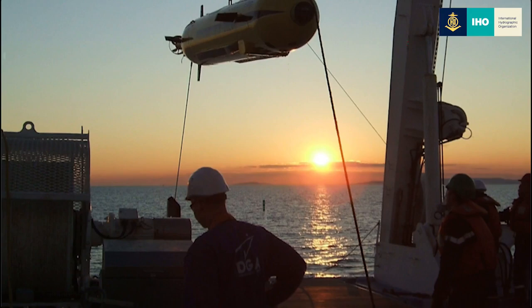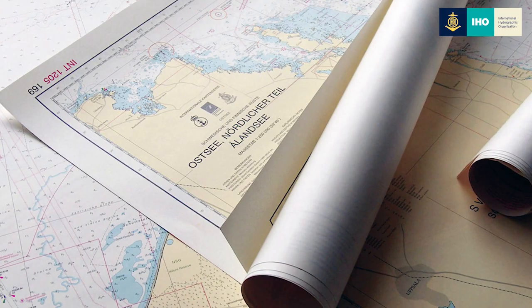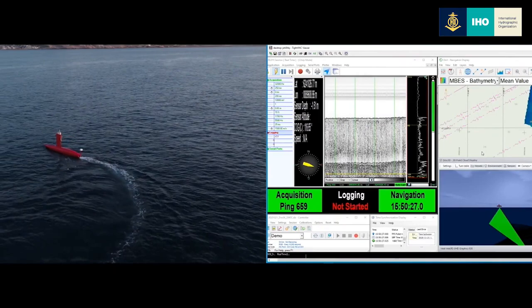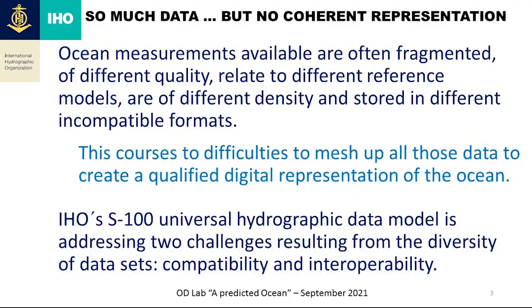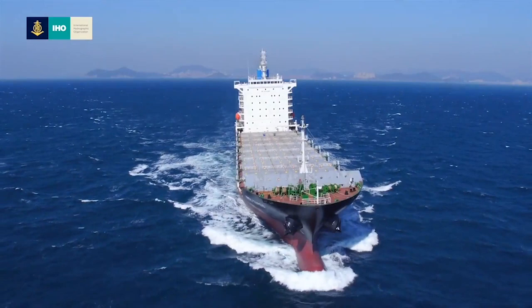Measurements of ocean characteristics have been systematically undertaken for decades. But the various data available are often fragmented, of different quality, related to different reference models, of different density, and stored in different incompatible formats. This is the case for every ocean discipline. When you consider the wide variety of ocean information — physical, chemical, and biological data — you easily understand the difficulties in combining data to create a comprehensive, holistic, qualified digital representation of the ocean. This is exactly where the IHO's S100 framework can help, addressing two challenges: compatibility and interoperability.